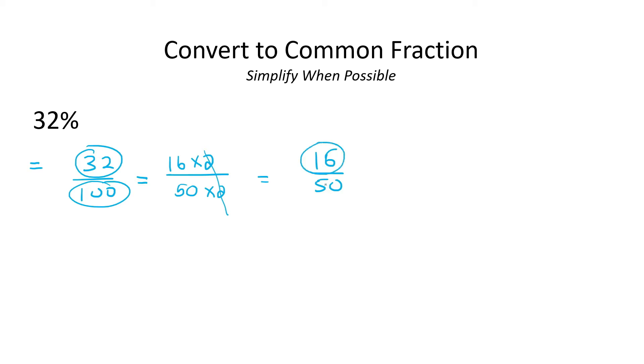Now the number 2 can go into both of these. So I could write this as 8 multiplied by 2 and 25 multiplied by 2. So those 2s can cancel. And so we're left with 8 over 25 and there is no number that can go into both of those.